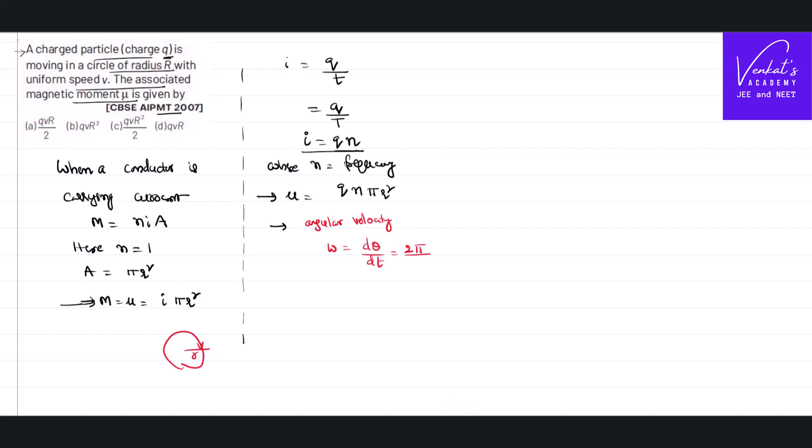angle it covers is 2 pi. Time taken to cover one rotation is called time period. 1 by time period as I told is called as frequency. So, I got omega as 2 pi n.